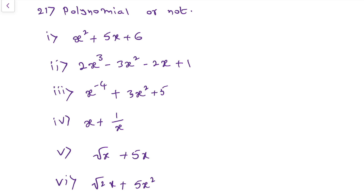Here, for x, power is 2. 2 is a whole number. Here, for x, nothing is there, so it means 1. Power is a whole number. So both the powers are whole numbers. So it is a polynomial.